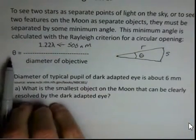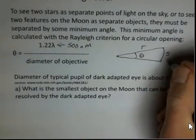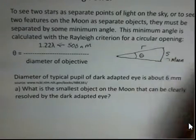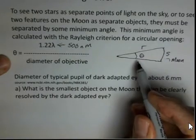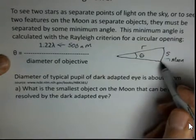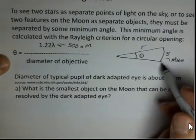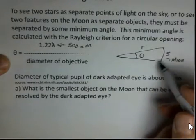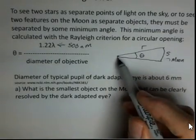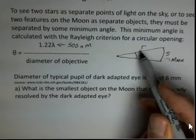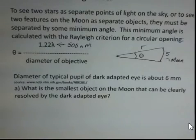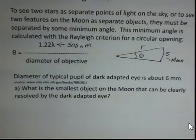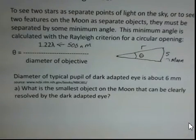We'll calculate theta, and then we'll apply that to the moon. S is the arc length of a circle — this will be where the moon is, the surface of the moon. Theta will be the angle we calculate using the Rayleigh criterion as to how big an object has to be, or how far apart two boulders have to be to see them as separate boulders on the moon. R is the distance from the observer to where we're looking — we'll use the Earth-to-moon distance, without correcting for the radius of the Earth, since that distance is significantly larger.